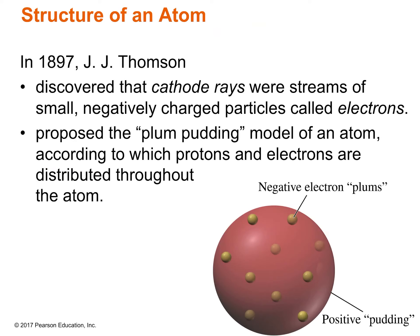One of the experiments was done by J.J. Thompson. He discovered cathode rays — he saw that these cathode rays were streams of small, negatively charged particles. And he called them electrons.